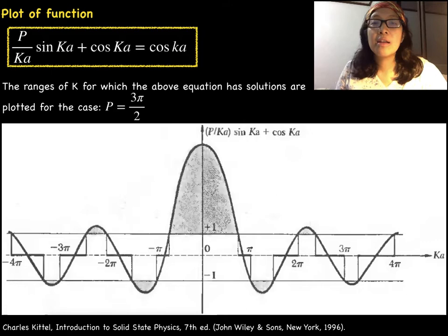provided P equals 3π/2. The y-axis is clearly indicated to be the left side of the equation while the x-axis is the dash line with arrow indicated as Ka with the capital letter K.